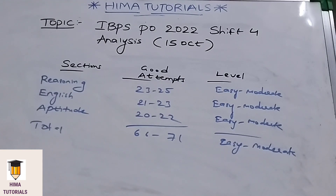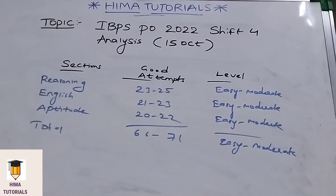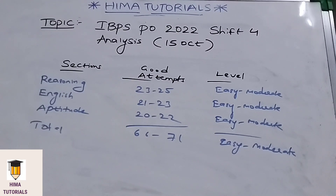Coming to good items and difficulty level of the exam. In the reasoning section, the good items are 23 to 25, and the level is easy to moderate. In the English section, the good items are 21 to 23, and the level is easy to moderate. In the aptitude section, the good items are 20 to 22, and the level is easy to moderate. Overall, the good items are 66 to 71, and the overall level is easy to moderate.